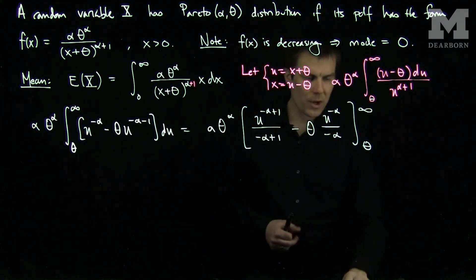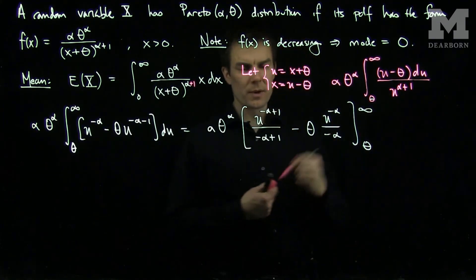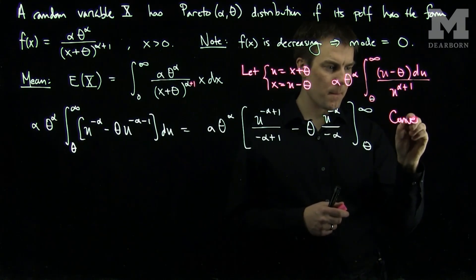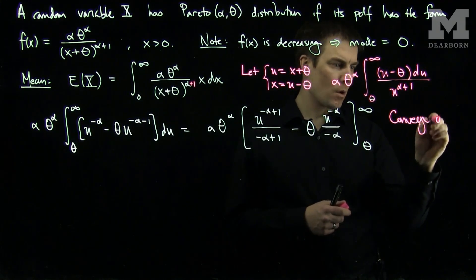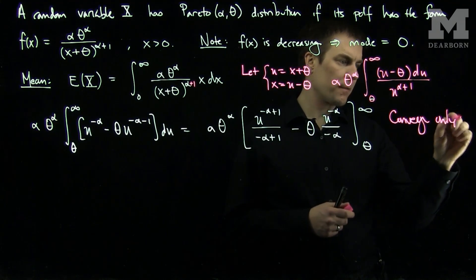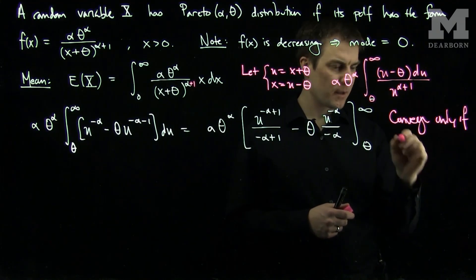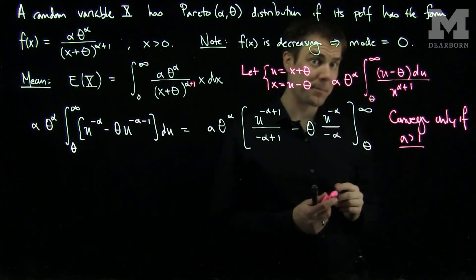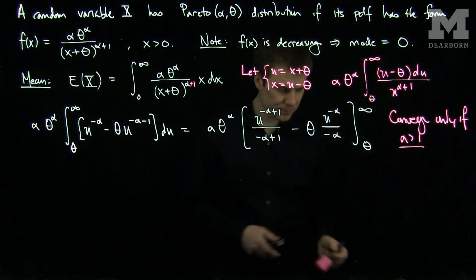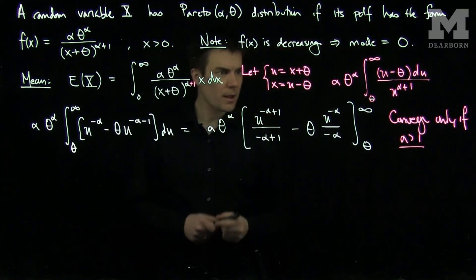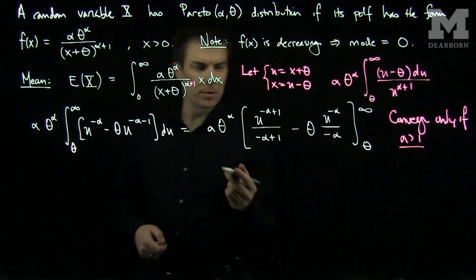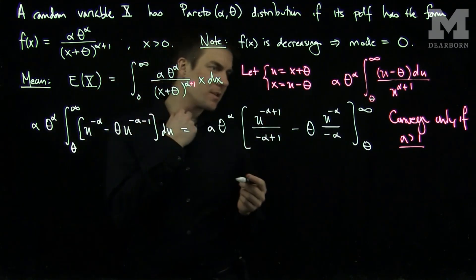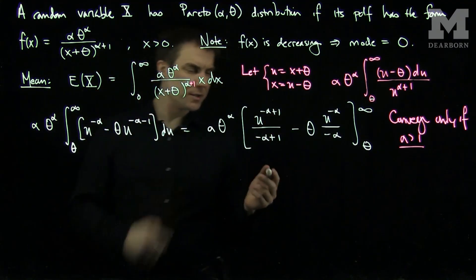Now we can note that this will be a convergent integral — it will converge only if alpha is bigger than 1. So in particular, if alpha is bigger than 1, the top limits of integration will be 0.